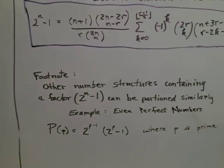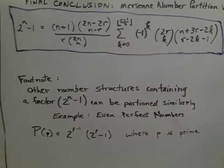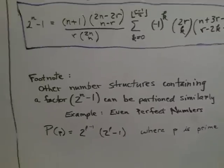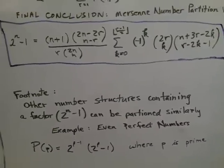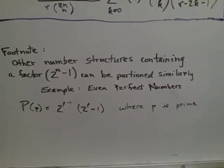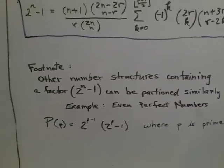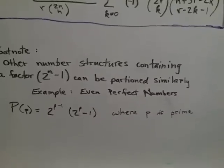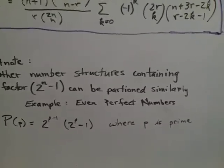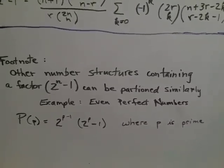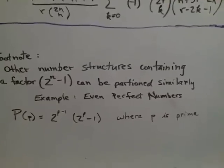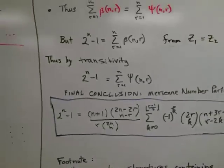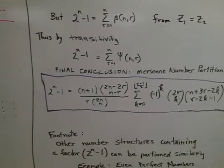As a footnote, let me just say that any other number structure that contains a similar factor of 2^n - 1 can be partitioned in the same way. An obvious example is even perfect numbers, which have a factor of 2^(p-1), except that these require that the exponent be prime. But otherwise, it's very similar to what's proven in this paper.